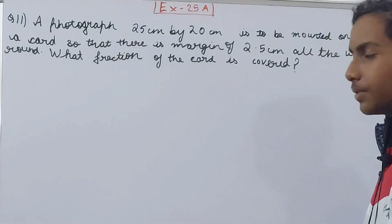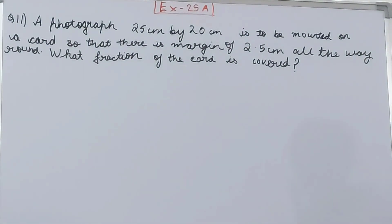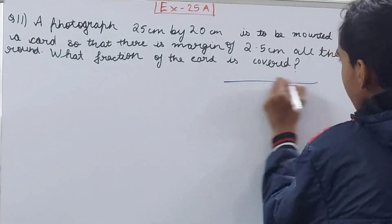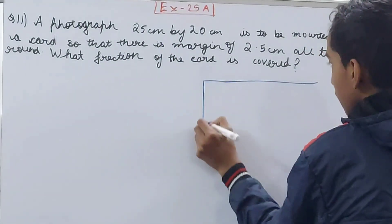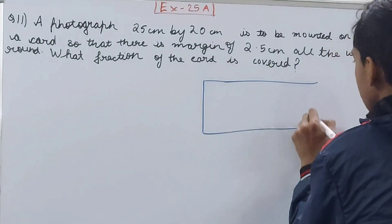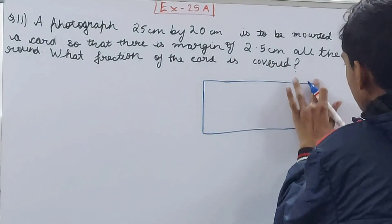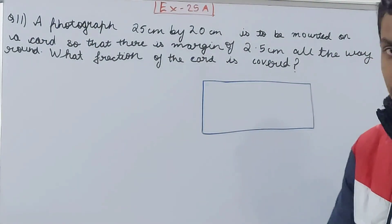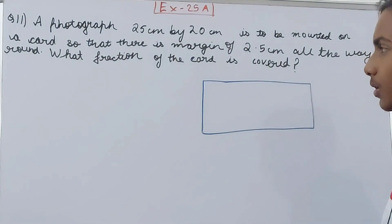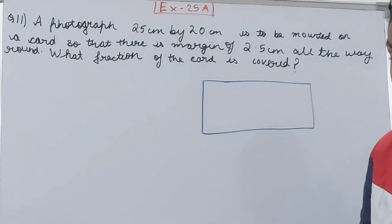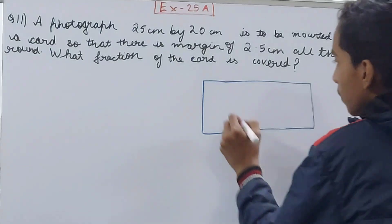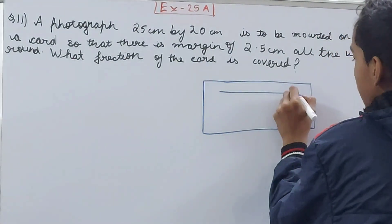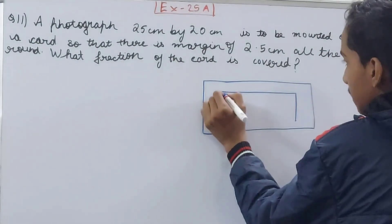See, this is trying to say that suppose I have a card — something like this, rectangular in shape. In this card I have to put my photograph, and the length of the photograph is 25 centimeters by 20 centimeters.